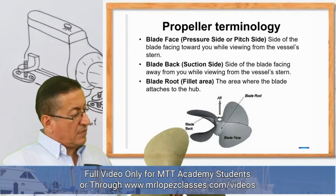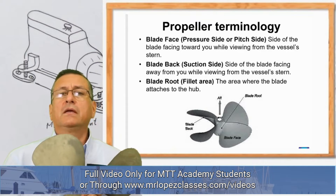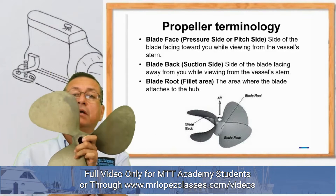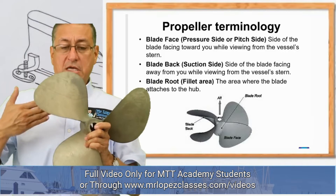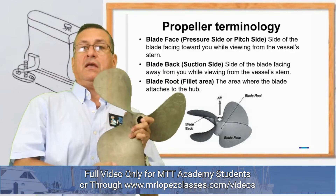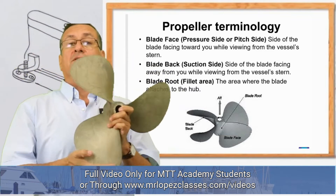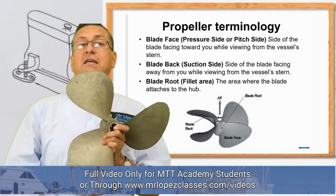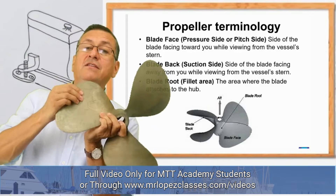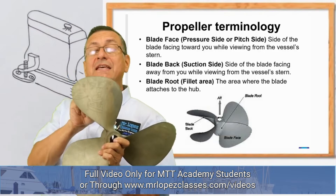Now the explanation about the propeller: I am the transom of the boat, and you are facing the boat from the back. This is the starboard side and this is the port side of the boat. This is the propeller of the starboard side, and this propeller is moving in this direction and advances over there.